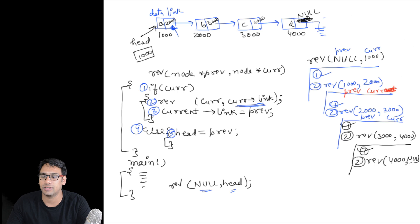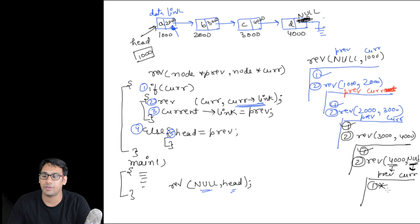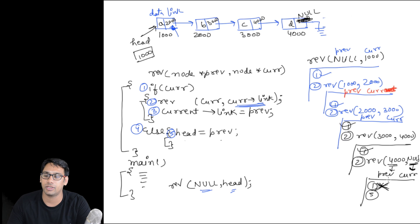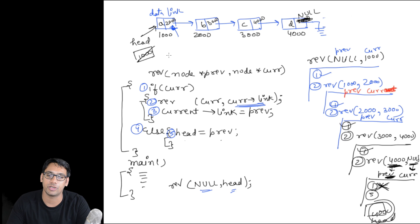When we call rev(4000, null), null is stored in current and 4000 is stored in previous. The if statement will not be executed because current is storing null and the if statement is false. Therefore we are going to execute line 5. In line 5 we store head equal to previous. That means in head we are going to store 4000, so head will now be pointing to location 4000.